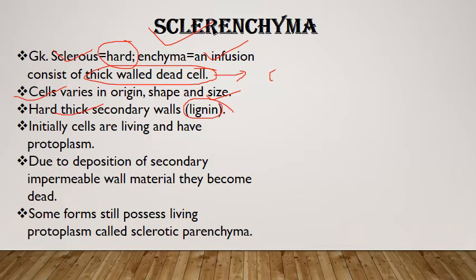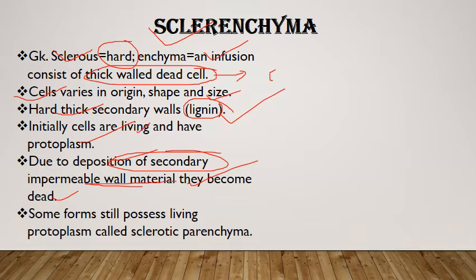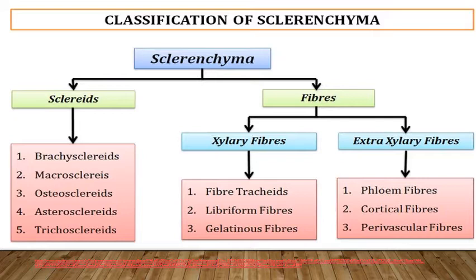Sclerenchyma cells have hard secondary thick walls made up of lignin. Initially cells are living, but due to deposition of impermeable wall material in the secondary wall, they become dead at maturity and have a narrow lumen. In exceptional cases, sclerenchyma may show living material — protoplasm — and this type is called sclerotic parenchyma.